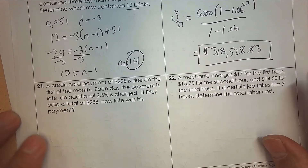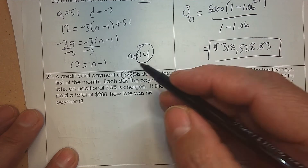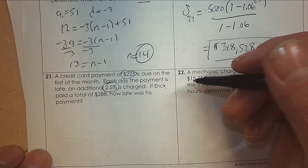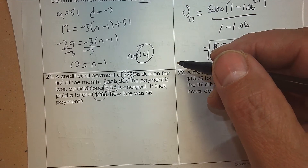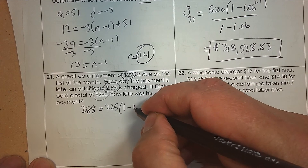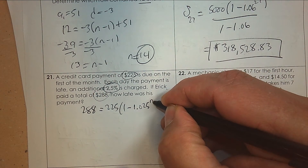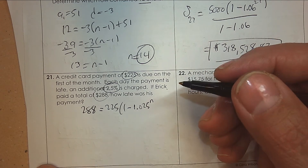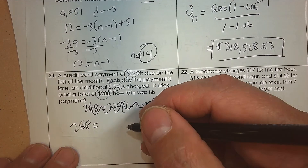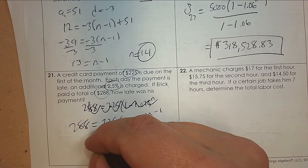Number twenty-one: a credit card payment of two hundred and twenty-five dollars is due on the first of the month. Each day the payment is late, an additional two point five percent is charged. If Eric paid a total of two eighty-eight, how late was his payment? Two eighty-eight is the final amount. It was two twenty-five times one point zero two five to the n minus one. Use your calculator, and n equals eleven.